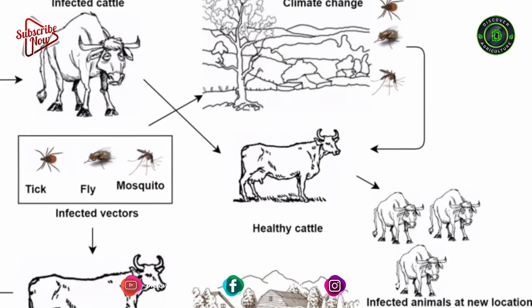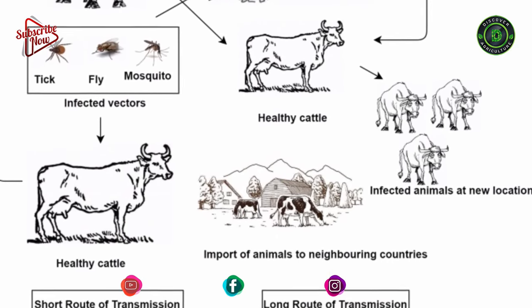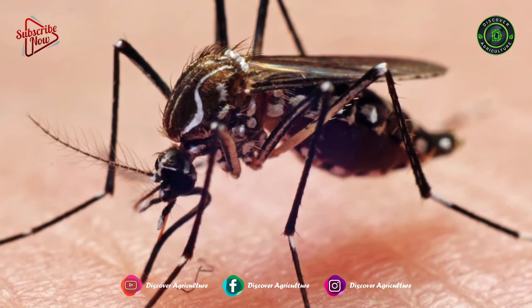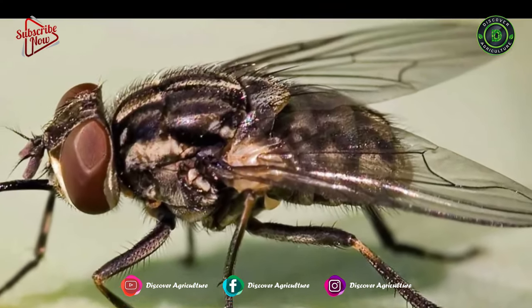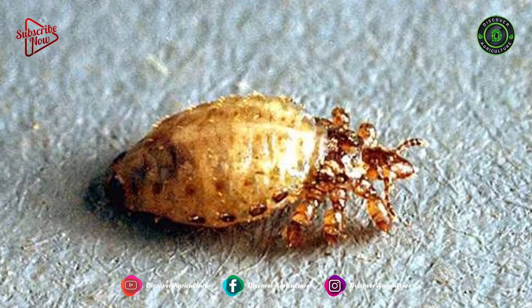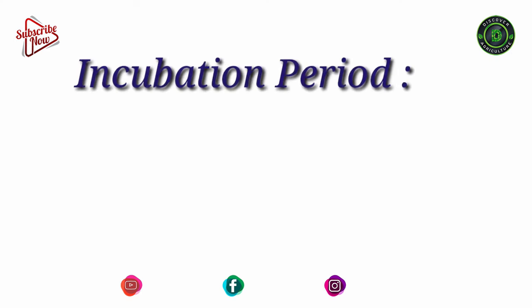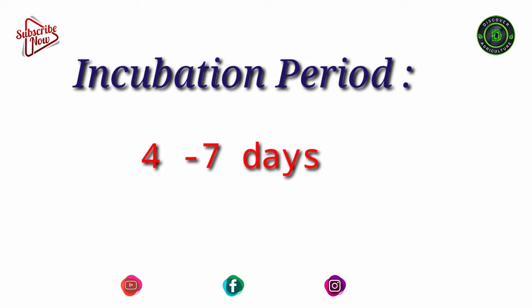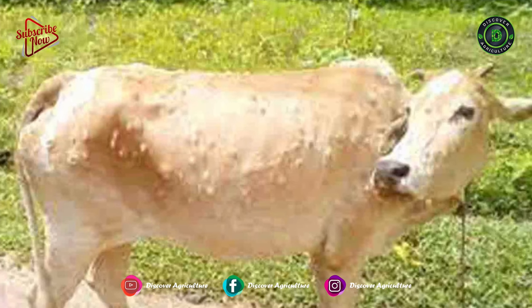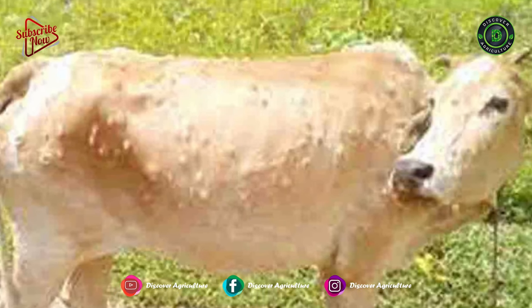Transmission: Lumpy skin disease is transmitted by blood-feeding insects like mosquitoes, flies, lice, and wasps, by direct contact, and also through contaminated food and water. The incubation period in experimentally infected animals varies between 4 and 7 days, but in naturally infected animals it may be up to 5 weeks.